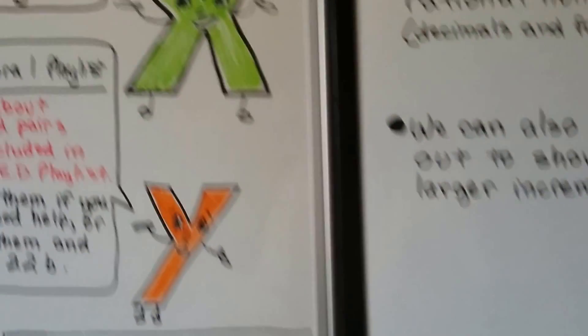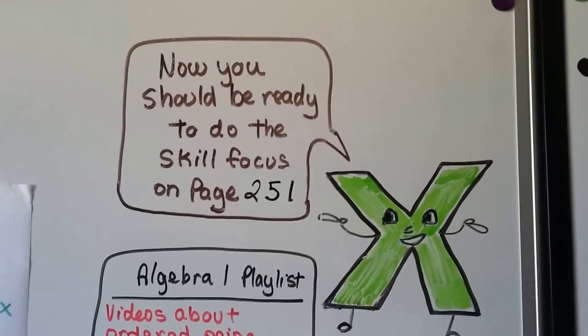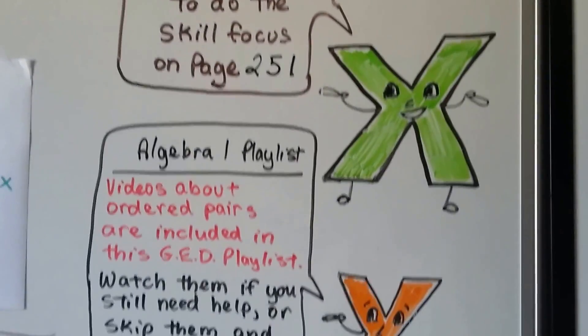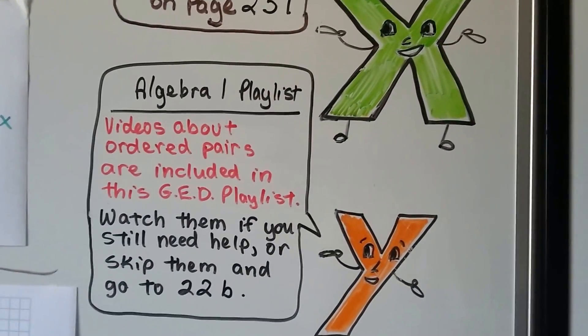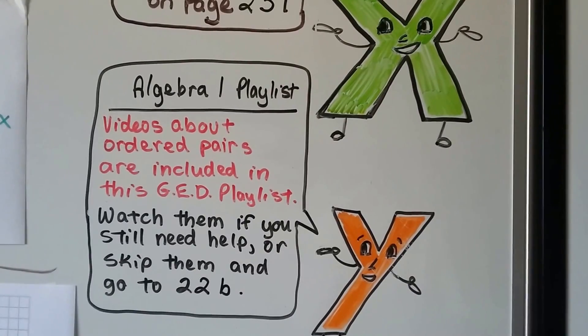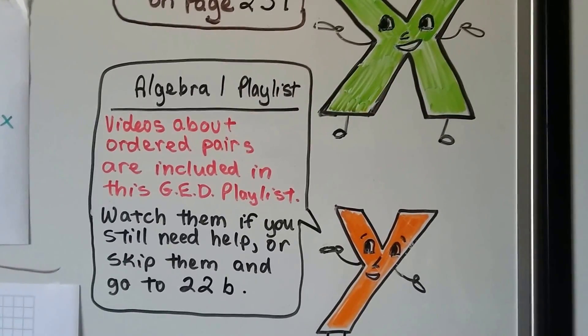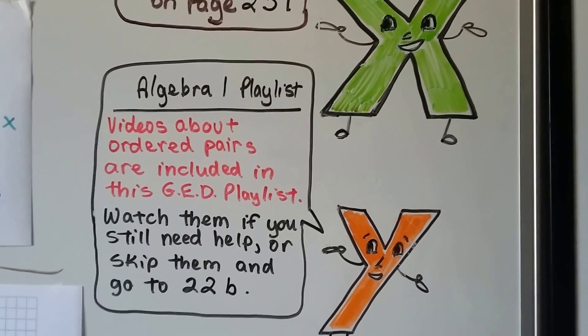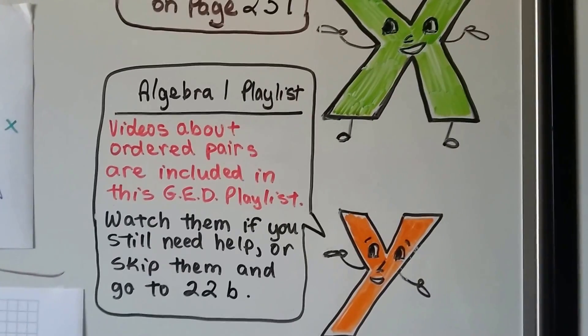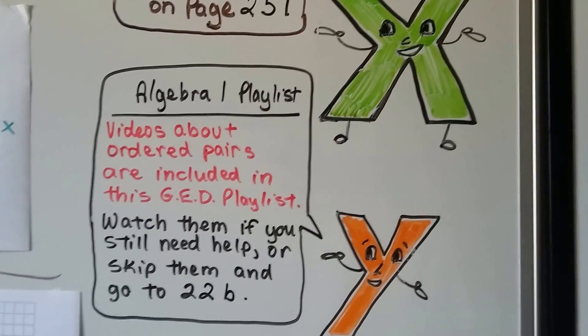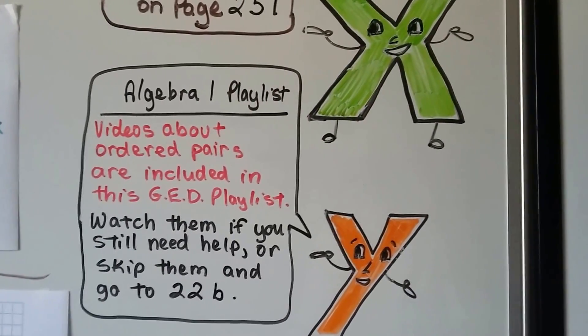So you should now be ready to do the skill focus on page 251. And I'm going to include some ordered pairs and coordinate grid videos, just a few of them, right after this video in this GED playlist. You can watch them if you want some extra help or if you're interested in the topic, or you could skip them and just go to lesson 22b.